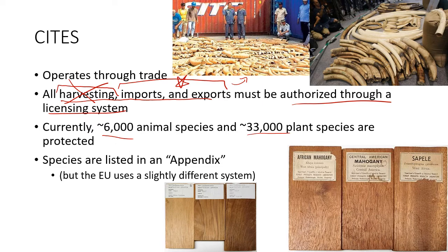Some species are difficult to protect because of ways people can get around the system. For example, Central American mahogany is on CITES but African mahogany and Cipele are not. These woods look very similar, so it'd be easy for somebody to harvest Central American mahogany, label it as African mahogany, and sell it on the international market. Sometimes it is very difficult to enforce and regulate.